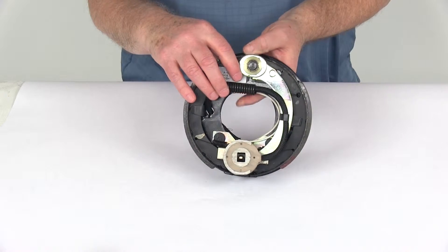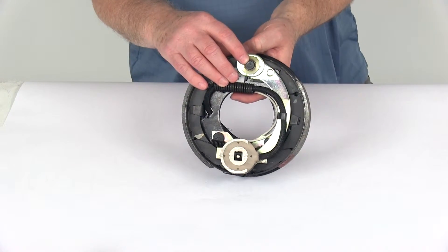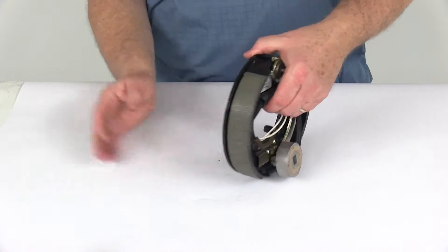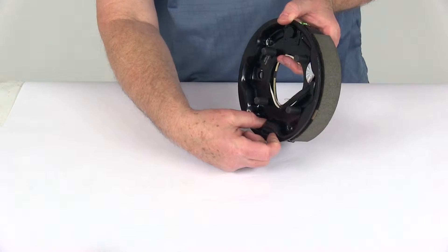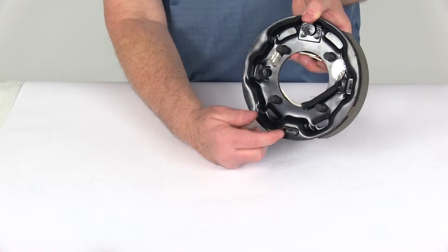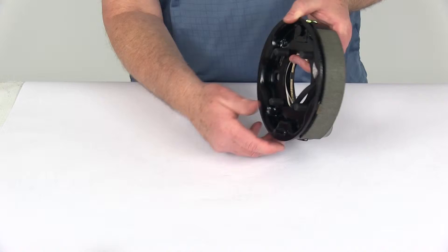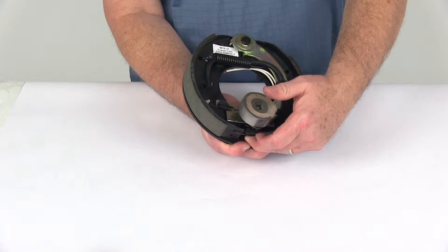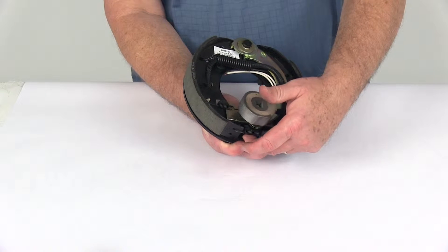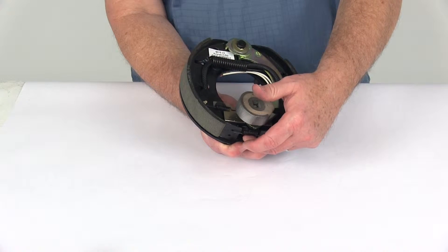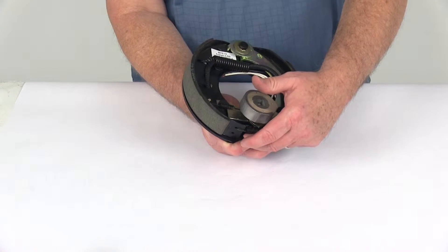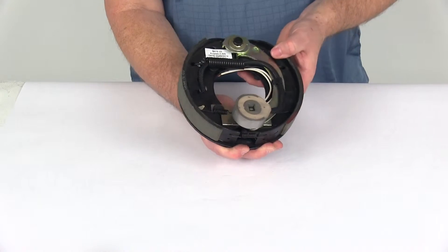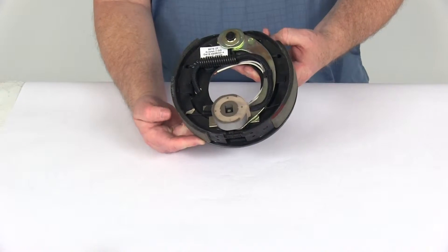These are manual adjustment brakes, so periodic manual adjustment is required. When you go to adjust them, you pop this adjuster plug out at the bottom. There will be a hole there where you can get your tool or screwdriver in to turn this star wheel to adjust the brakes in or out. They use a fine-tooth brake adjustment gear, which allows for a more precise setting. When you install these, there's no break-in period needed.